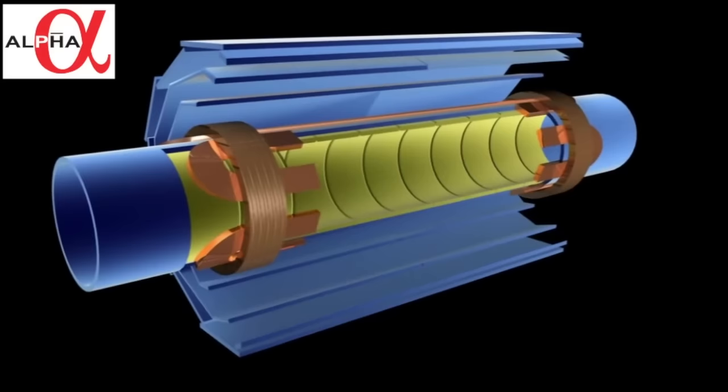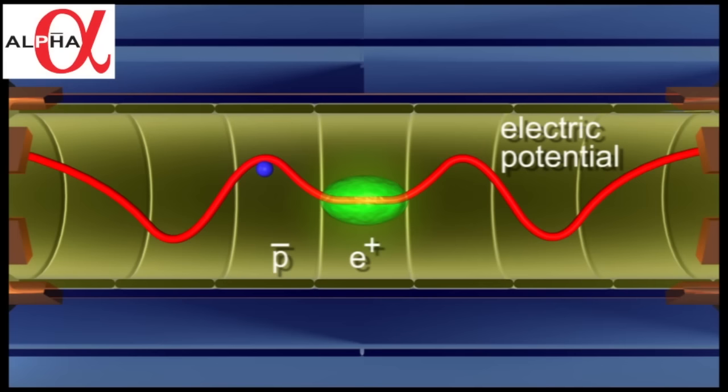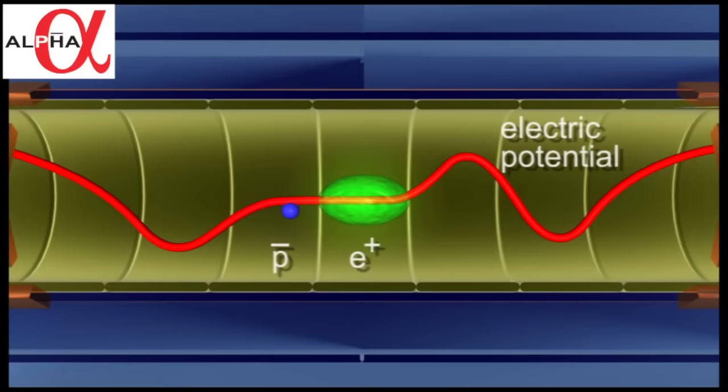We zoom in to look at the actual potential holding the charged particles. We see how the positrons and the antiprotons are held before they are merged, and now we have the merger where we move the potential to bring the antiprotons into contact with the positrons.